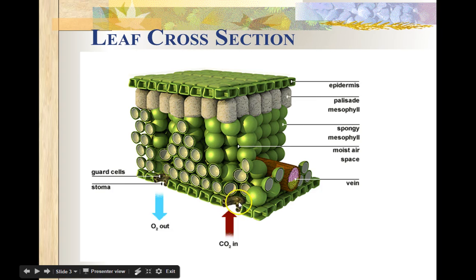So the stoma are regulated by guard cells. So in this diagram, these U-shaped cells are the guard cells. So they can expand and contract in response to environmental conditions, either allowing in carbon dioxide or letting out oxygen.